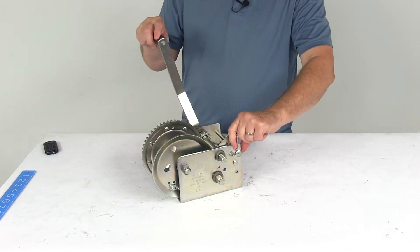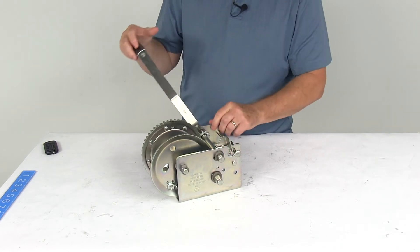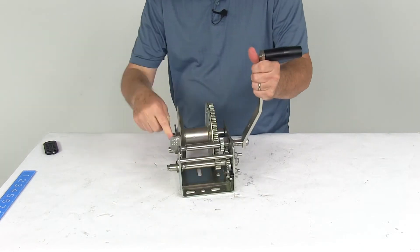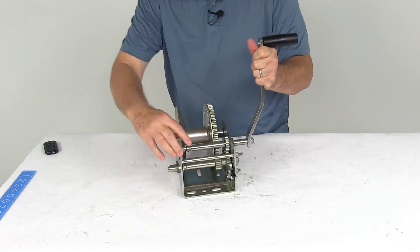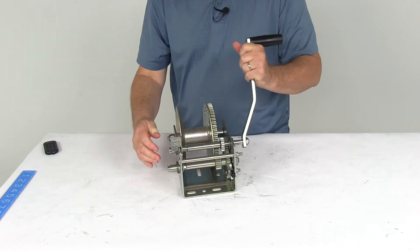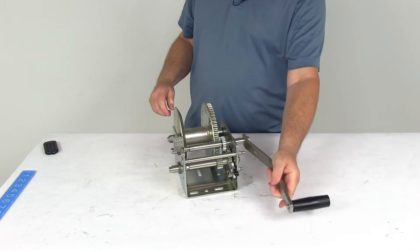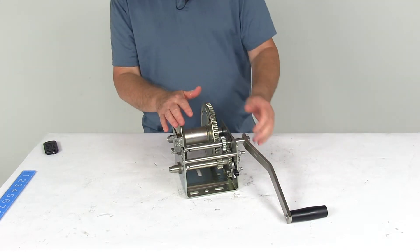Now also in the very middle, there's a middle indentation right here. You can see as you pull that shift lock, you can see the different indentations. Right in the middle, that's the neutral freewheel position that'll allow quick line payout without the handle spinning.